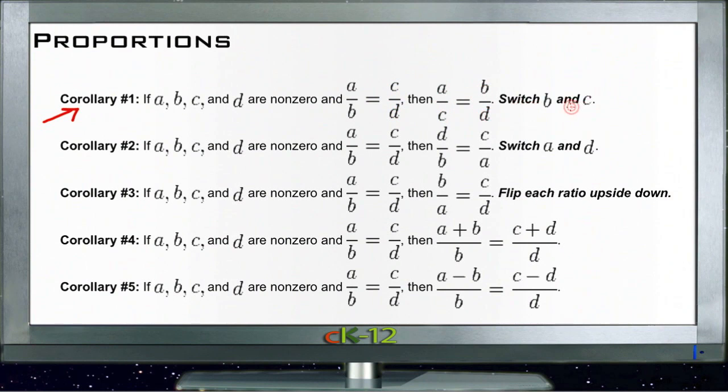What they've done there is switch B and C. And you would do that by just multiplying both sides by B, and then dividing both sides by C, and then multiplying both sides by D, and dividing both sides by A. So you can move these letters around by multiplying both sides by the same letter or dividing both sides by the same letter.